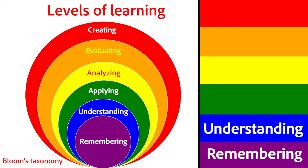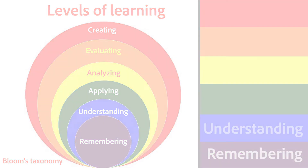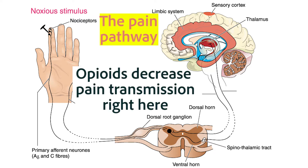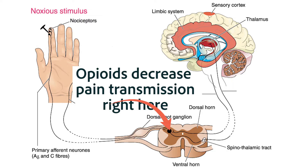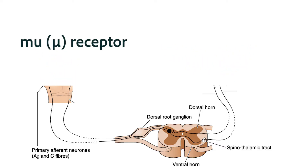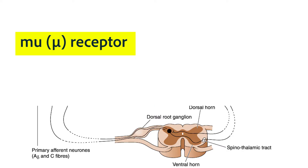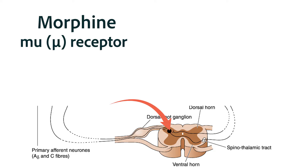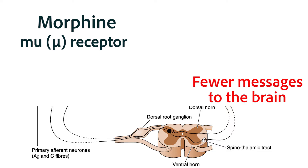Now let's apply our understanding of affinity, selectivity, and potency to opioid medications. Opioid analgesics work by binding to opioid receptors mainly in the spinal cord. There is what we can simplistically think of as a gate there — pain is transmitted from the extremities, and this gate can decrease the number of impulses allowed to reach the brain. The main receptor involved in analgesic effects here is the mu receptor. Morphine binds to these mu receptors, decreasing messages to the brain so that the perception of pain decreases.